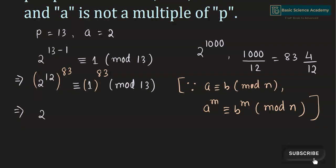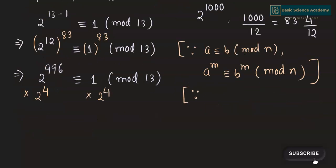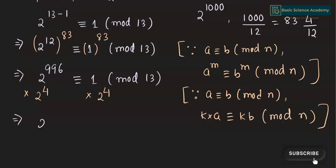This gives 2 to the power of 12 multiplied by 83, which is 996, is congruent to 1 to the power of 83, which is 1, mod 13. In order to get 2 to the power of 1000 we multiply both sides by 2 to the power of 4, in accordance with the law of modular notation: if a is congruent to b mod n then k multiplied by a is also congruent to k multiplied by b mod n. Hence this gives 2 to the power of 1000 is congruent to 2 to the power of 4, which is 16, mod 13.